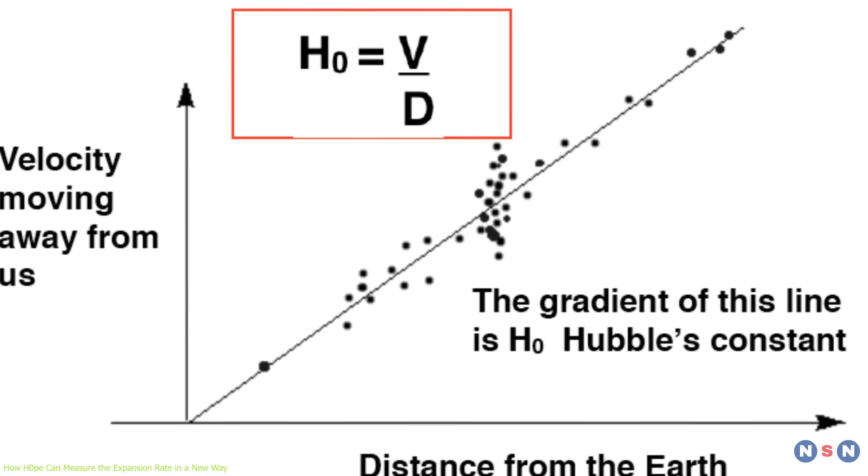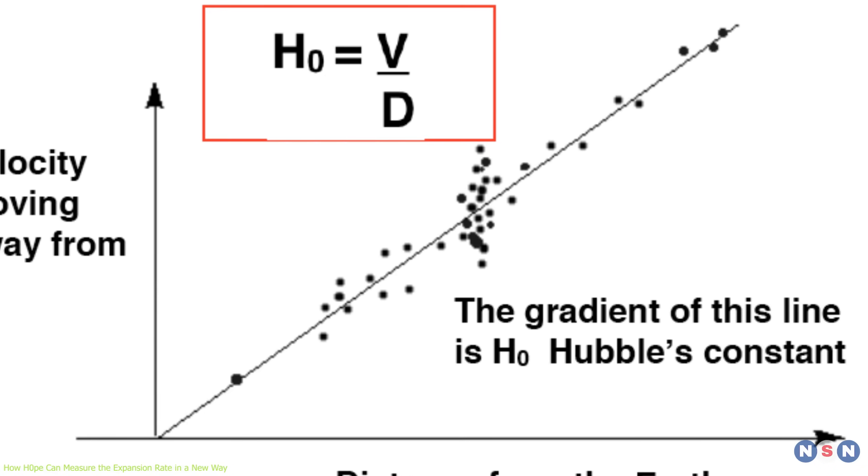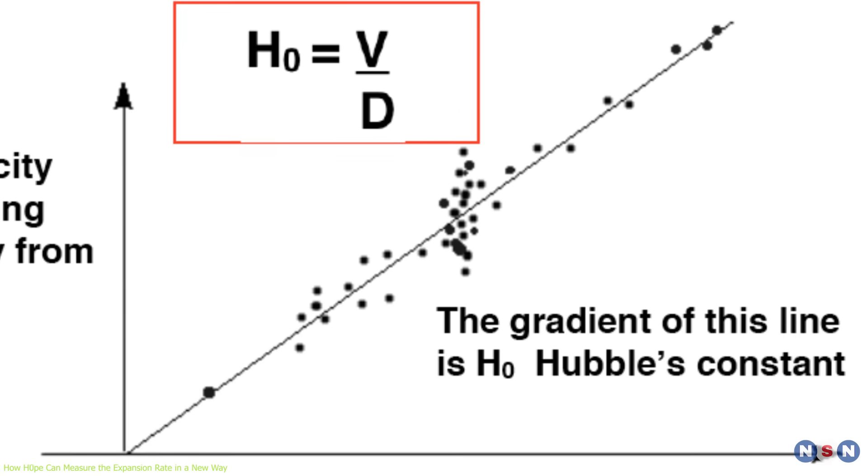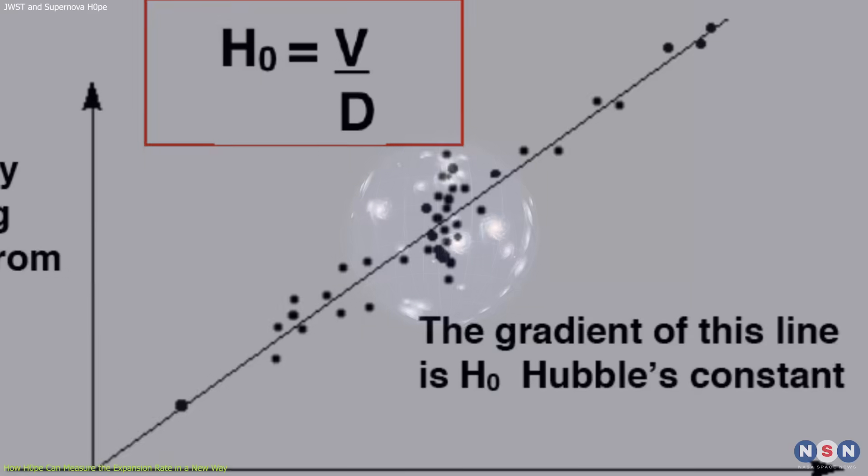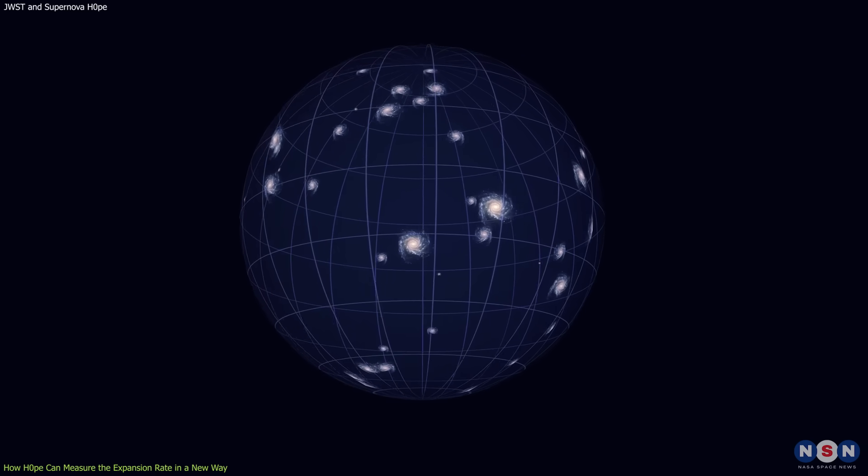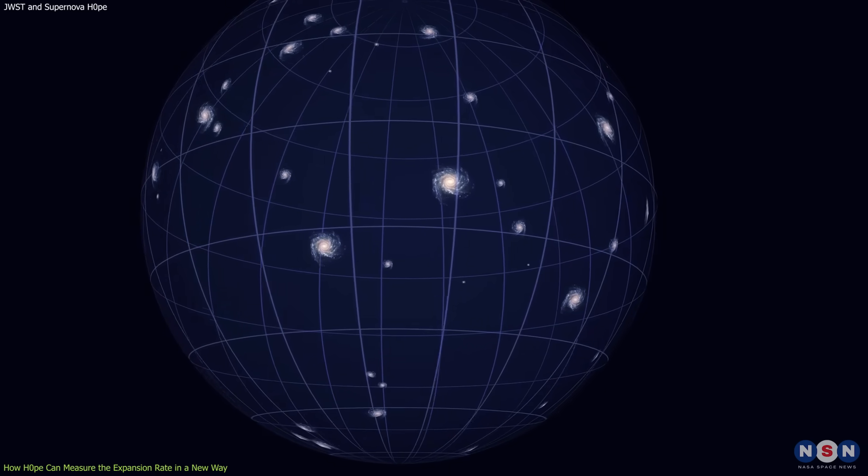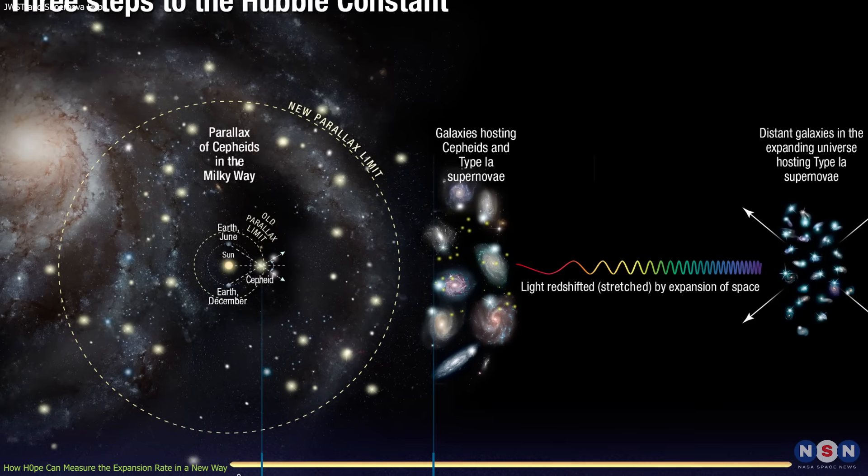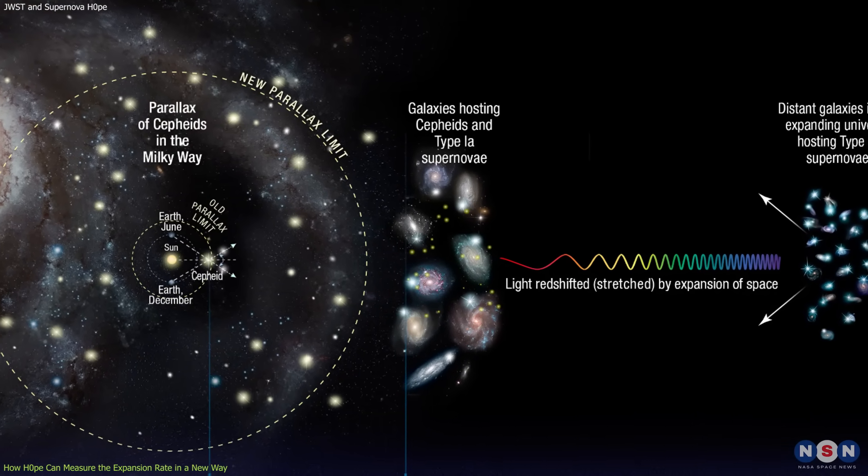The Hubble constant, or H0, is the proportionality factor that relates distance and speed in Hubble's law. It tells us how fast the universe is expanding at the present time. But here's the problem.